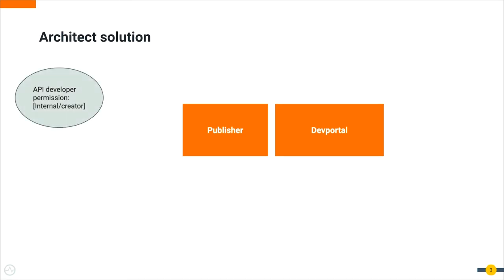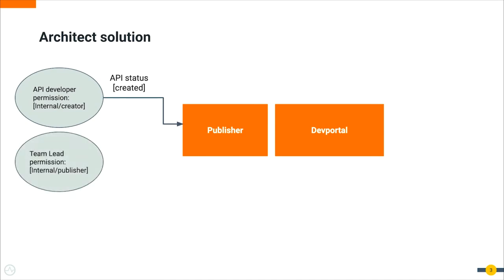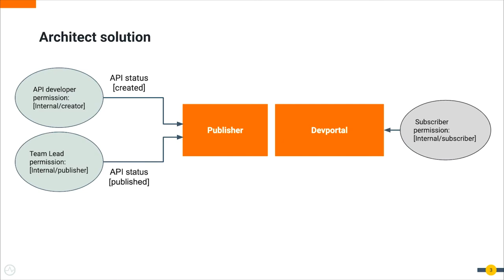API developers would have an internal/creator role, allowing them to only create APIs. Team leads or API product managers will have an internal/publisher role, allowing them to publish APIs, which means changing the API status to published.